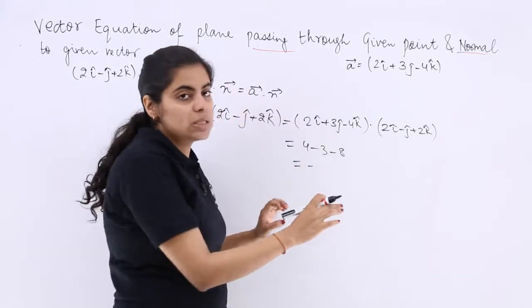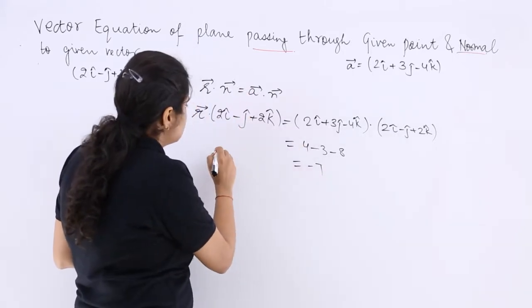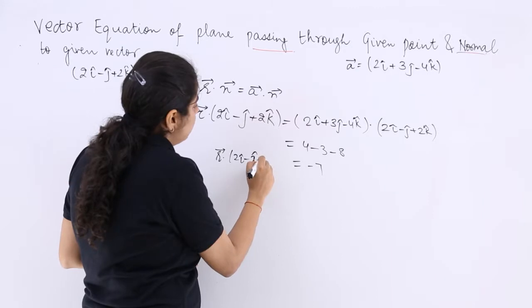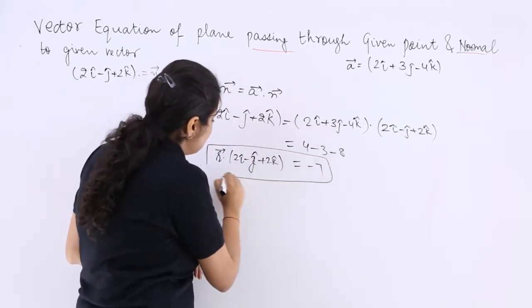So 4 - 3 is 1, 1 - 8 is minus 7. And here it is r vector dot (2i - j + 2k). So this is the equation that has been formed.